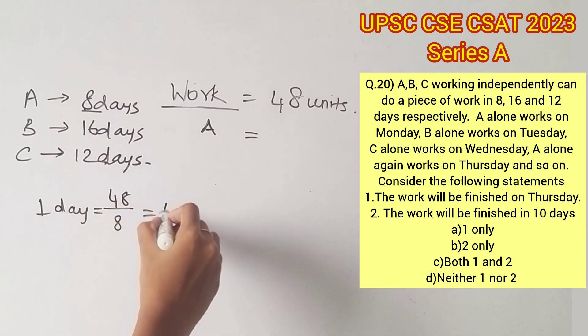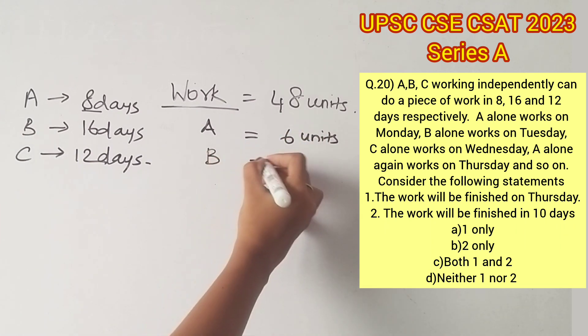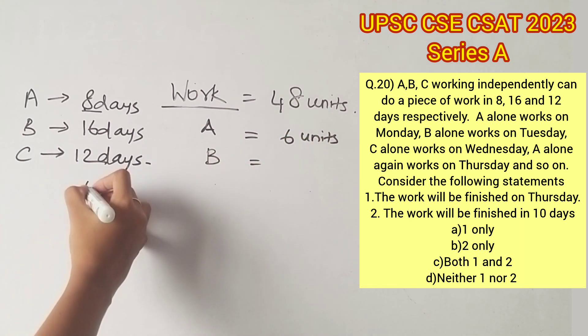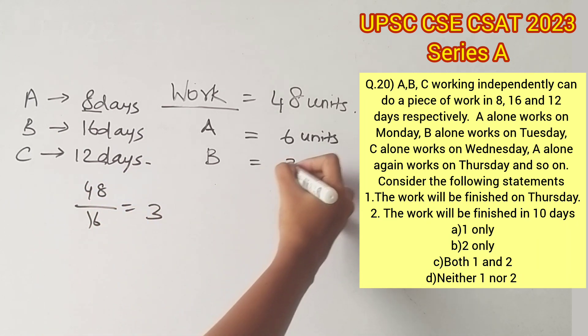Similarly, B takes 16 days to complete 48 units of work, which means in a single day B can complete 48 by 16, that is 3 units of work.